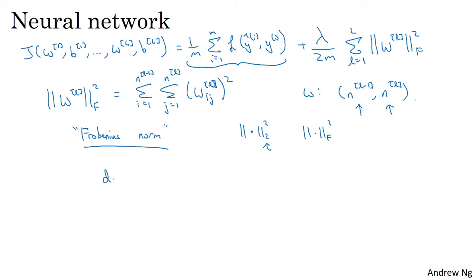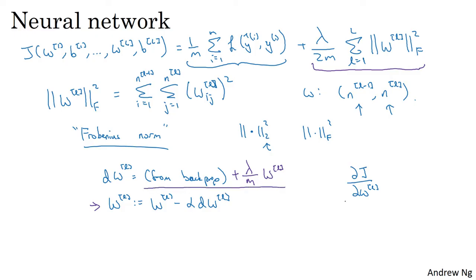How do you implement gradient descent with this? Previously, we would compute dW using backprop, where backprop gives us the partial derivative of J with respect to W[L]. Then you update W[L] as W[L] minus the learning rate times dW[L]. Now that we've added the regularization term to the objective, you take dW and add to it lambda over M times W. Then you compute this update same as before. With this new definition, dW[L] is still a correct definition of the derivative of your cost function with respect to your parameters. It's for this reason that L2 regularization is sometimes called weight decay.